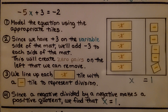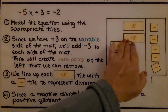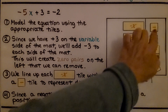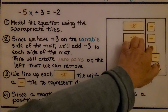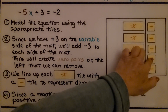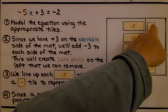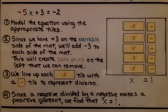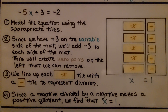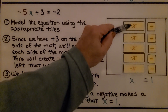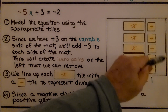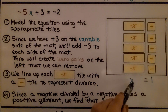We line up each negative variable tile with a negative square tile, which represents division — we're making equal groups. Matching each negative variable with an equal amount on the right side, we see that one negative variable tile equals one negative square tile. Since a negative divided by a negative makes a positive quotient, we find that x is equal to positive 1.